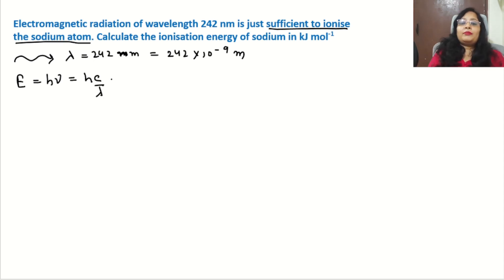But one thing we have to mention: it is mentioned here it should be kilojoule per mole. Per mole means we have to calculate for one mole of sodium atom. To find for one mole, we will multiply the energy with the Avogadro number, where N₀ is the Avogadro number. Now putting all the values, we will get the ionization energy of one mole of sodium.